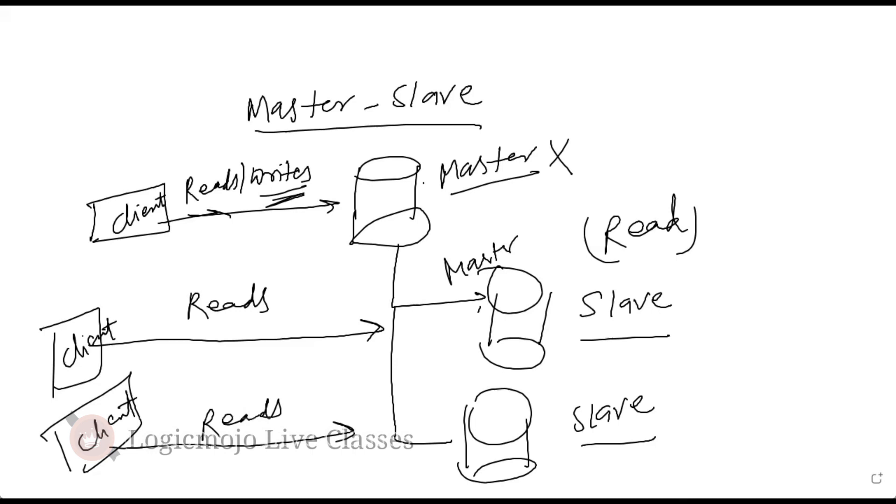One question here. So the replication, which happens to the slaves, so there would be a delay, right? So the consistency wouldn't be so strong as what we saw in the earlier case. Right, so. So in short, a write operation will be costly, correct?